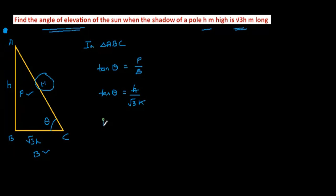We know tan 30 degrees equals 1 by root 3. Therefore, theta equals 30 degrees. The angle of elevation of the sun is 30 degrees.